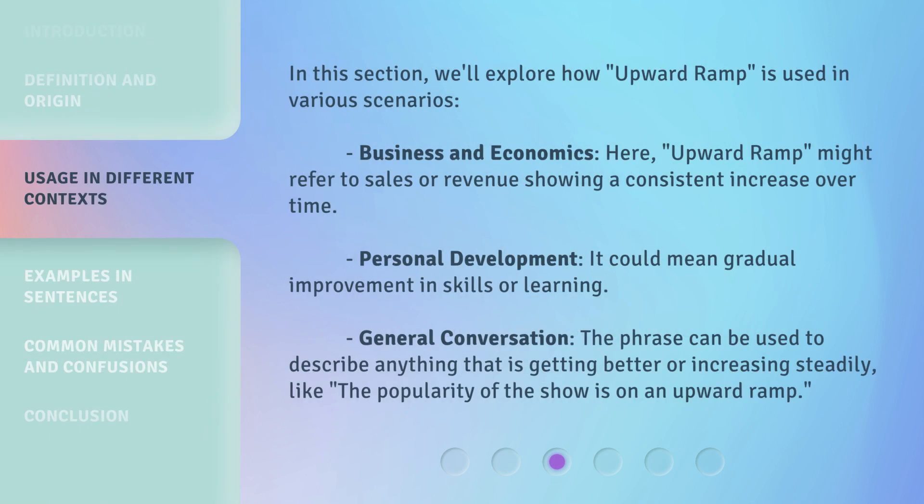In this section, we'll explore how Upward Ramp is used in various scenarios. In Business and Economics, Upward Ramp might refer to sales or revenue showing a consistent increase over time. In Personal Development, it could mean gradual improvement in skills or learning. In General Conversation, the phrase can be used to describe anything that is getting better or increasing steadily — like, 'The popularity of the show is on an upward ramp.'